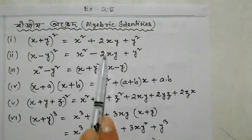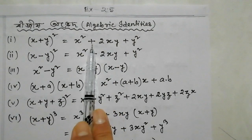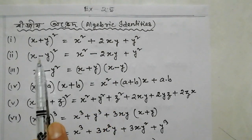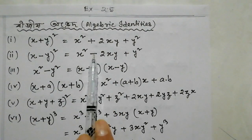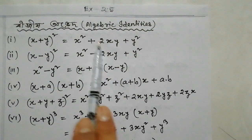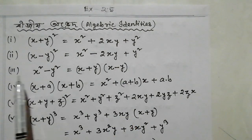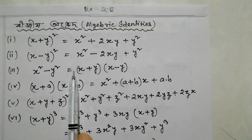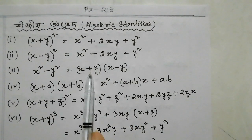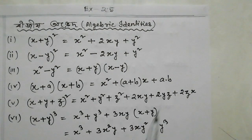The formula: x square minus y square equals x plus y whole into x minus y.